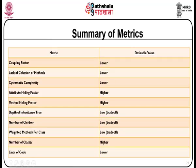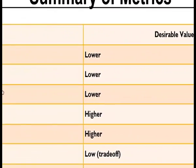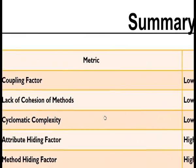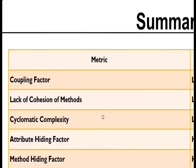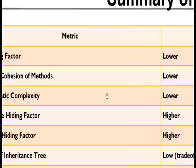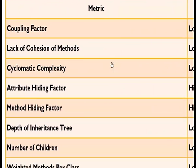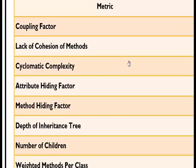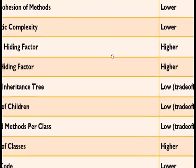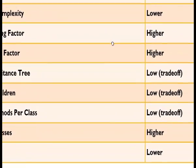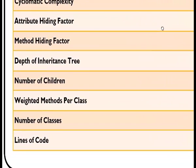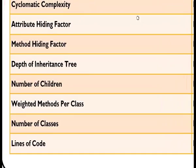Summary of metrics and their desirable values: coupling factor — lower; lack of cohesion of methods — lower; cyclomatic complexity — lower; attribute hiding factor — higher; method hiding factor — higher; depth of inheritance tree — low; number of children — low; weighted methods per class — low; number of classes — higher; lines of code — lower.